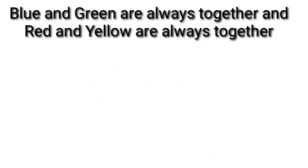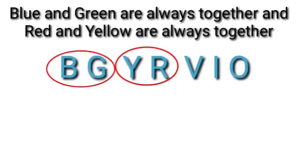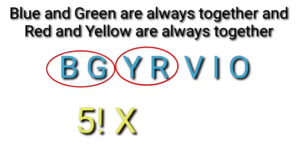Next part: blue and green are always together, and red and yellow are always together. We form two strings — one for blue and green, one for red and yellow — along with 3 remaining colors, counting each string as 1 unit. So we have a total of 5 units to arrange.